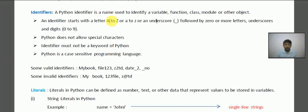Some valid identifiers are: MyBook, all the alphabets are there, one capital alphabet also. The next file123, this one is also valid because 123 is after the file.